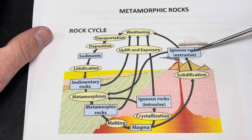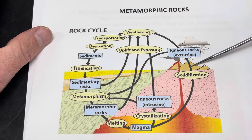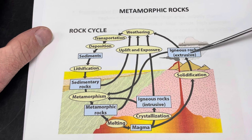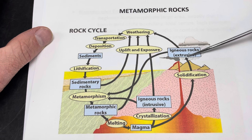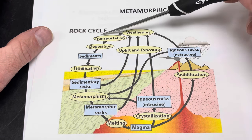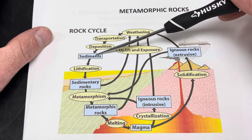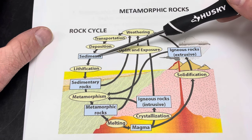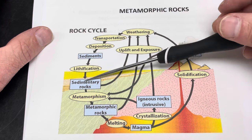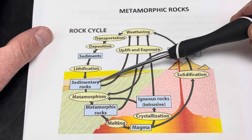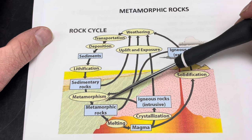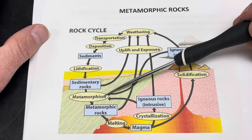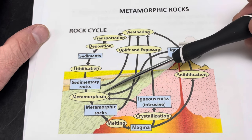Magmas that rise to the surface erupt as lava or ash or other materials to form extrusive igneous rocks, volcanic rocks. Rocks get exposed and broken down into particles we call sediments. They can eventually be deposited and buried and brought together to form sedimentary rocks. And we're looking today at metamorphism and metamorphic rocks.